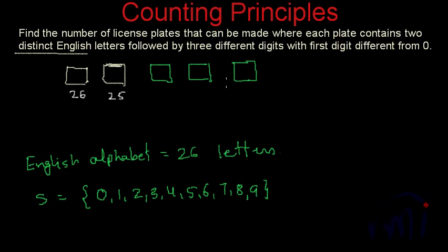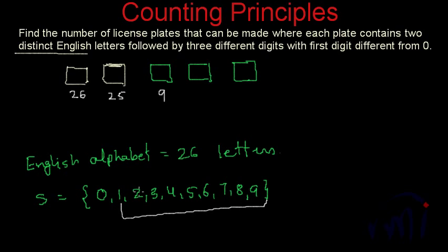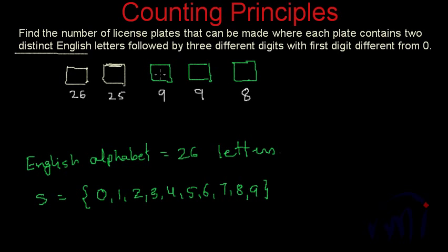Then we have three places to be filled with different digits. We have a total of 10 digits, but there is a condition for the first digit place: it cannot have zero. So we will have only nine choices for the first digit place. For the second digit place, the digit already chosen cannot repeat, but zero is now allowed, so we again have nine choices. Then we have eight choices for the third digit place, because we cannot repeat the digits already written at the first and second places.